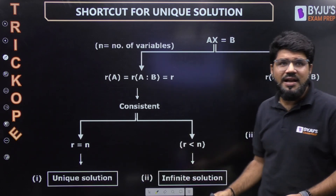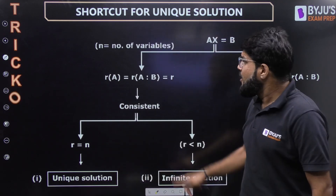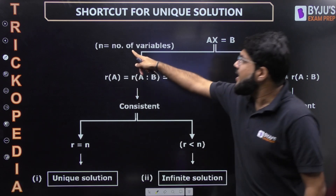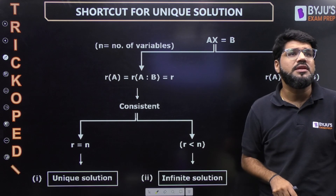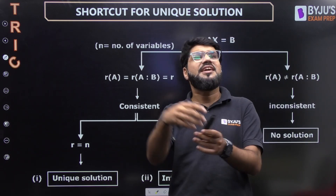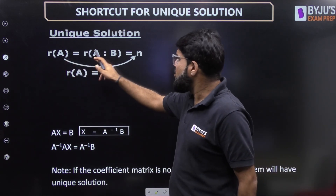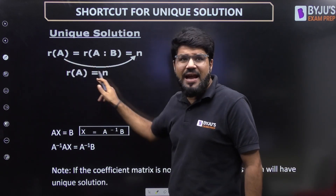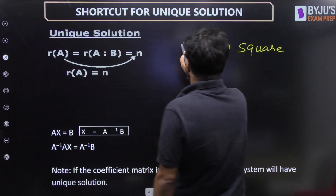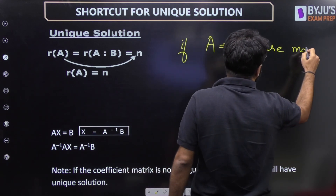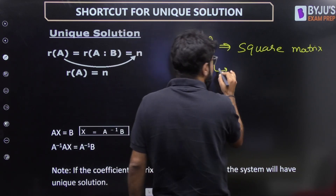If the ranks are not equal, the system is inconsistent and gives no solution. Now, if both ranks are equal and equal to n, where n is the number of variables, then the system has a unique solution. So the condition is: rank(A) = rank([A|b]) = n. If A is a square matrix — which covers 90% of questions — this is where the trick comes in.